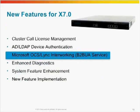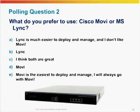Our next main feature in X7 is the back-to-back user agent, which optimizes and simplifies OCS deployments. A polling question: What do you prefer to use? Cisco Movi or Microsoft Lync? A. Lync is much easier to deploy and manage, and I don't like Movi. B. I like Lync. C. I think both are great. D. I like Movi. E. Movi is the easiest to deploy and manage — I will always go with Movi.